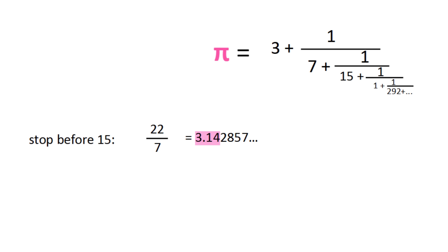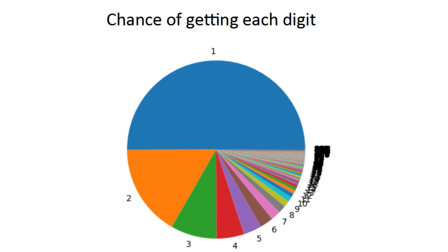But after that is a 1 and then a 292, which results in 355 over 113, which matches pi for 7 digits. So it's not a coincidence that you can find a good rational approximation, but it is a coincidence that pi has a 292 so early, which gives you one right away.